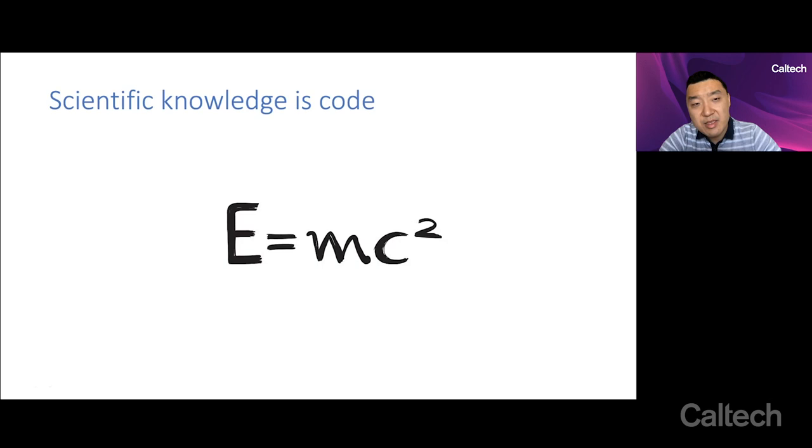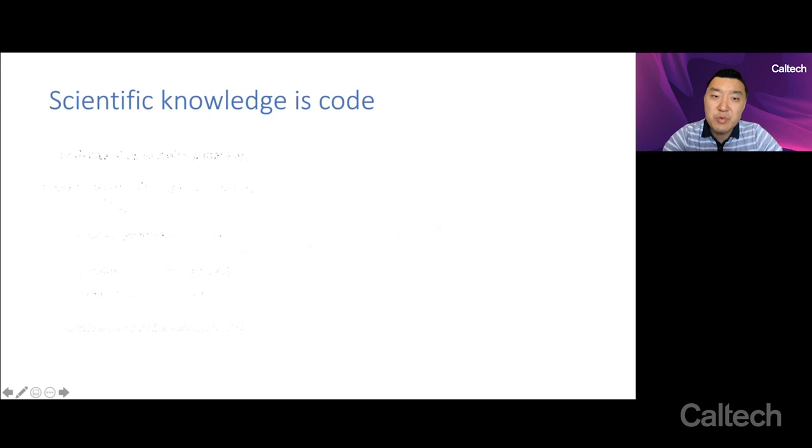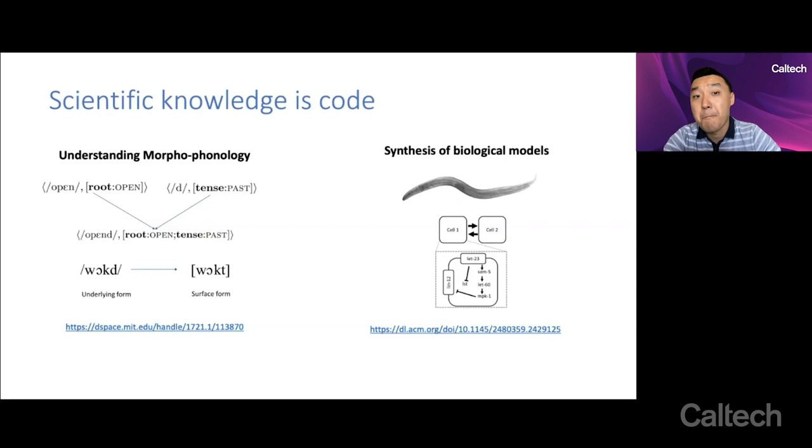The next thing that I want to note is that, in a sense, all of scientific knowledge, at least the stuff that's codified, is code. Equations are code. Flow charts are code. Diagrams, in a sense, are code. So all of scientific knowledge is code, in a nutshell. And we see specific examples of this where automated program synthesis has been used to study data sets and design codes or programs or symbolic models to explain the data in a way that's interesting for scientists. And so this is actually happening already.